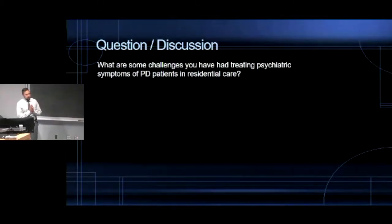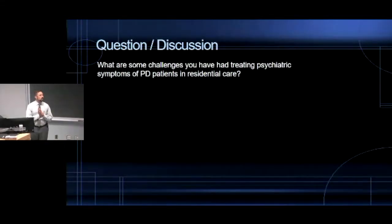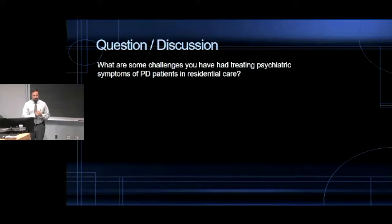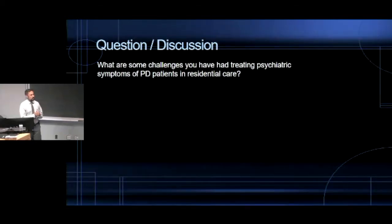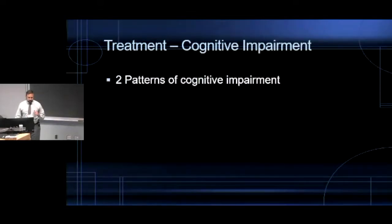Moving on to neuropsychiatric symptoms. Psychiatric manifestations of Parkinson's disease challenging in residential care include: hallucinations, obsessive behaviors, impulse control, anxiety, paranoia, nightmares, compulsive behaviors, and depression — which happens quite often. The other major category is cognitive impairment. There are two patterns of cognitive impairment in Parkinson's disease: subcortical cognitive impairment, referring to subcortical structures such as the basal ganglia, and cortical cognitive impairment.